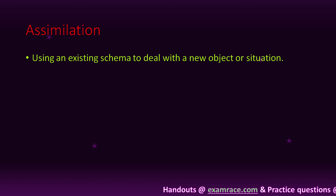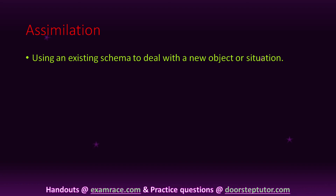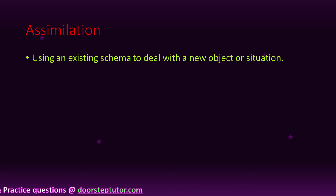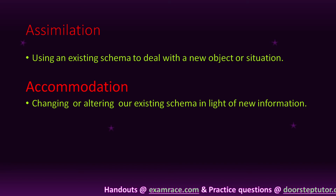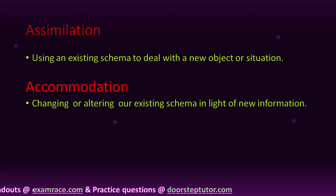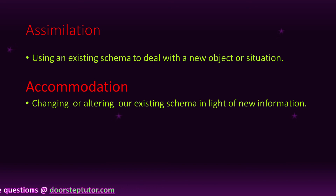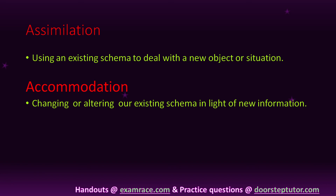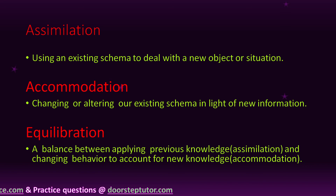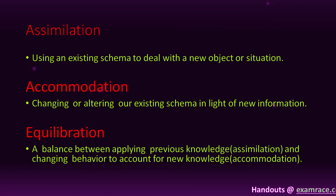Assimilation means using an existing schema to deal with a new object or situation. Accommodation means changing or altering our existing schema in light of new information. Equilibration is a balance between applying previous knowledge — assimilation — and changing behavior to account for new knowledge — accommodation. Cognitive structure contains the cognitive schema, and cognitive functioning contains three parts: assimilation, accommodation, and equilibration.